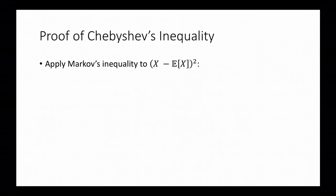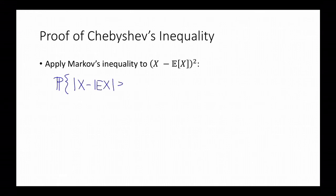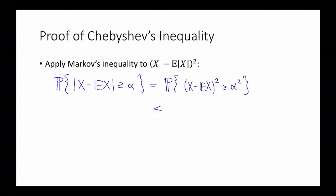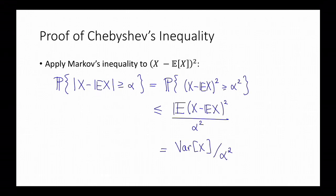For a quick proof of Chebyshev's inequality, we just apply Markov's inequality to the random variable (x minus the expectation of x) squared. More precisely, we write the probability that the absolute value of x minus its expectation is greater than or equal to alpha, which is the same as the probability that (x minus the expectation of x) squared is greater than or equal to alpha squared. Applying Markov's inequality gives at most the expectation of (x minus the expected value of x) squared divided by alpha squared — and this quantity on top is just the variance of x. So this proves Chebyshev's inequality.